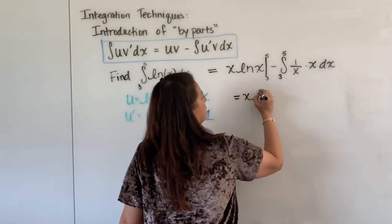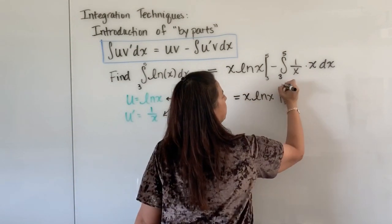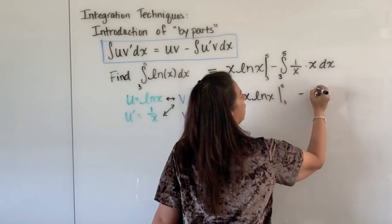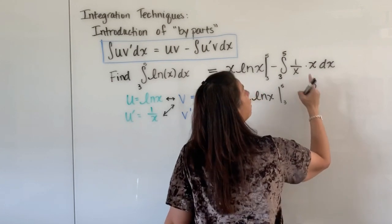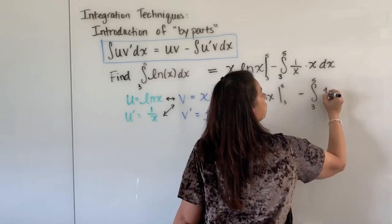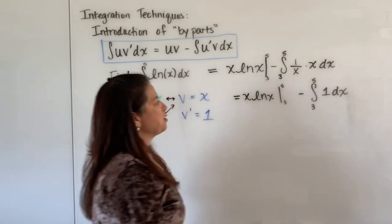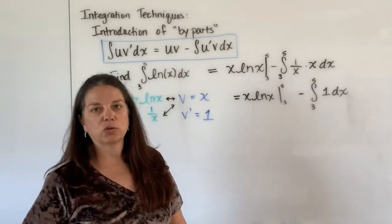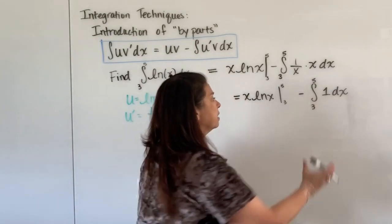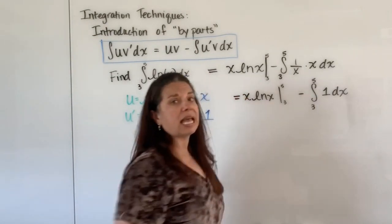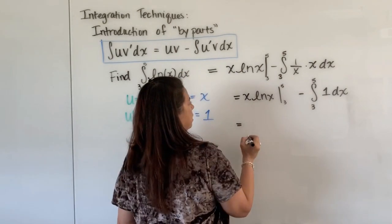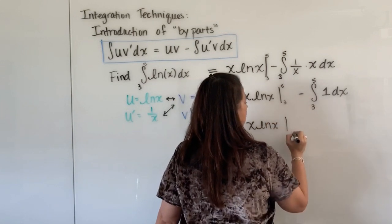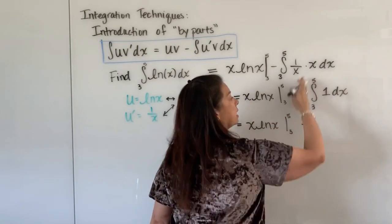And now I'm going to subtract off my integral, also evaluated from 3 to 5. This reduces to just 1 times my dx. Well, that's wonderful because we can easily find the integral of just 1. With respect to x, this integral here would just be x.